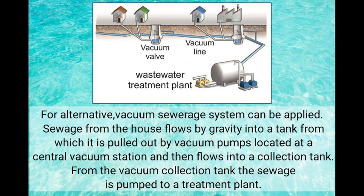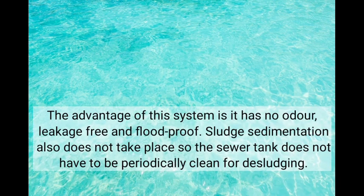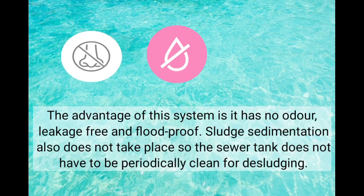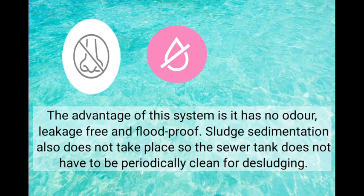Sewage from the house flows by gravity into a tank from which it is pulled out by vacuum pumps located at a central vacuum station and then flows into a collection tank. From the vacuum collection tank, the sewage is pumped to a treatment plant. The advantages of this system are no odor, leakage-free and flood-proof.